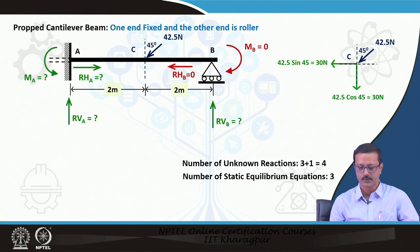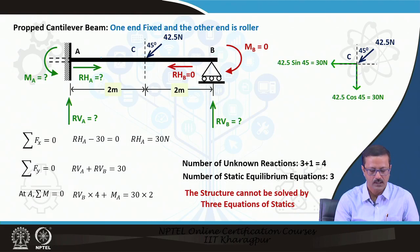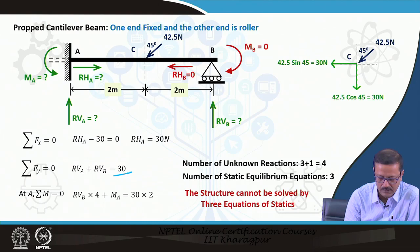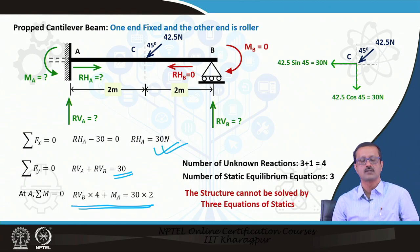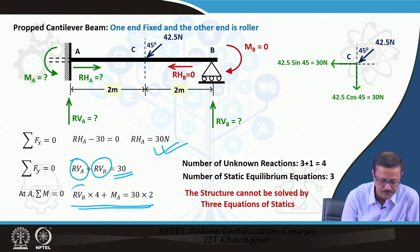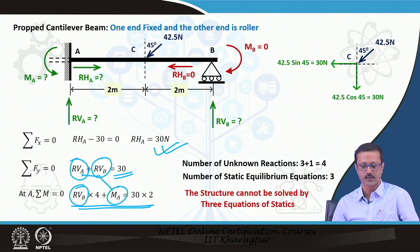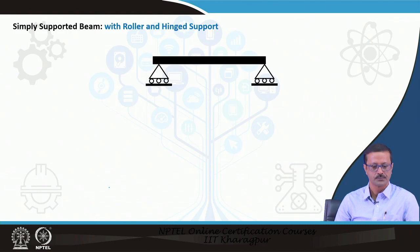For a propped cantilever again there are 3 unknowns at the fixed end and 1 at the prop, totaling 4 unknowns but only 3 equations. From sigma Fx, R_HA = 30 is found. However, the remaining 3 unknowns cannot all be resolved, confirming this is statically indeterminate.